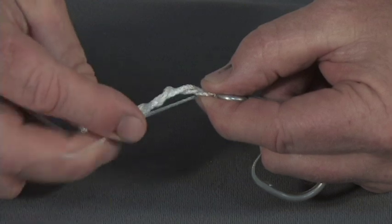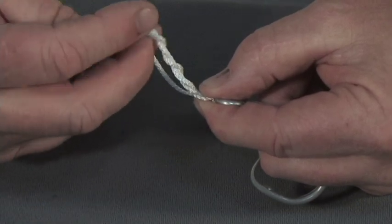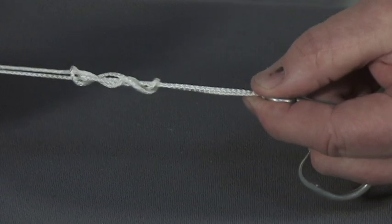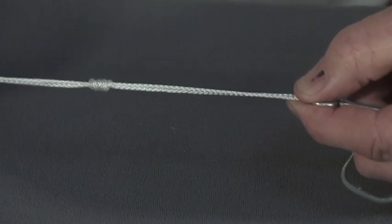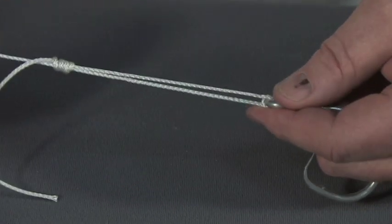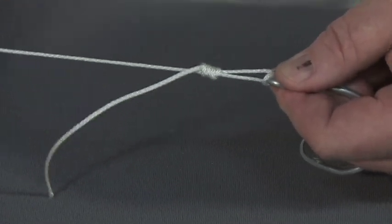And then pull on both ends. Then don't pull it real tight, so it will slip. Slip it down to the eye of the hook.